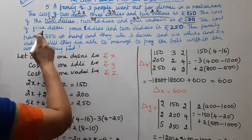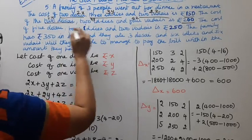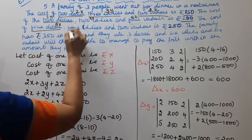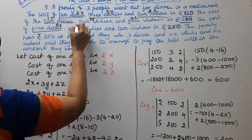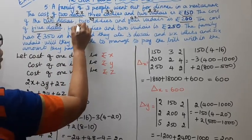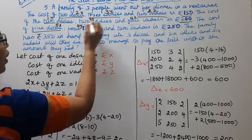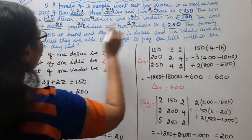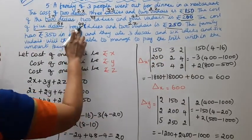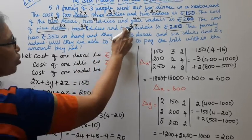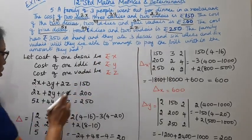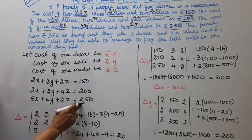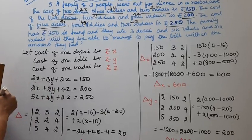The cost of 5 dosai is 5x, 4 idlis is 4y, and 2 vadais is 2z. So the third equation is: 5x + 4y + 2z = 250.